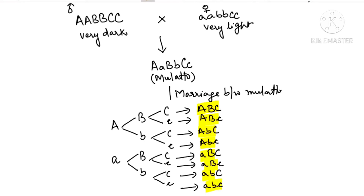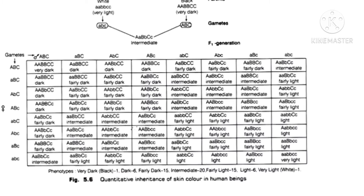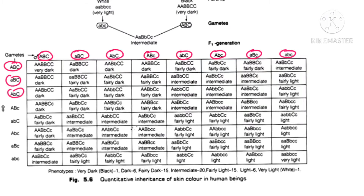We put these gametes on the Punnett square. You can see on the board — these are the eight types of male gametes, and the same eight types of female gametes. When you fill it in, you get 64 Punnett boxes. Now check the ratio carefully.